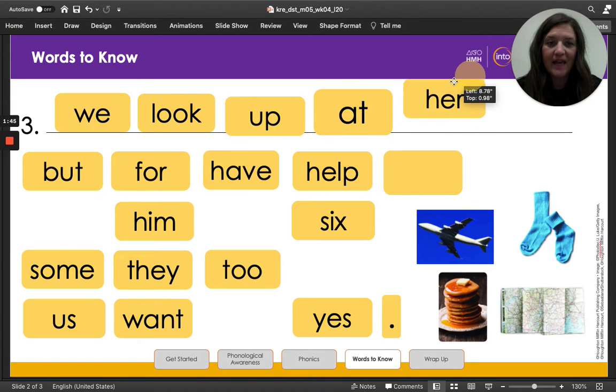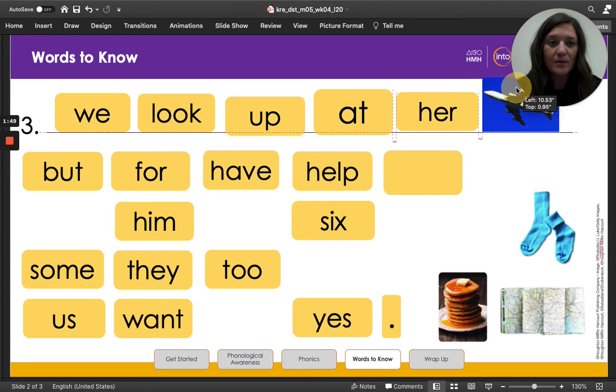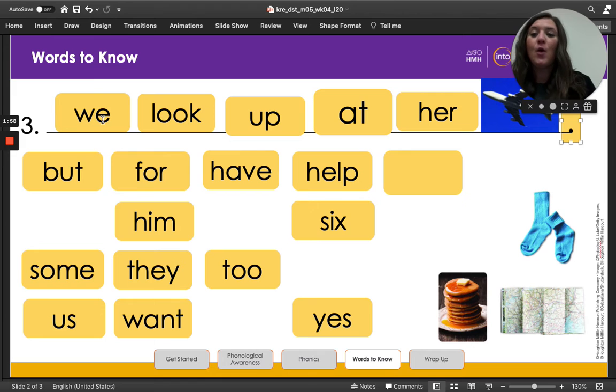Her. And then remember, we're talking about a plane. Put that there. And then at the end of our sentence always comes a period. Great job. We look up at her plane. Awesome job.